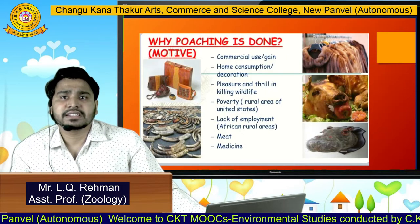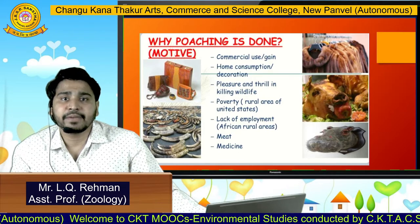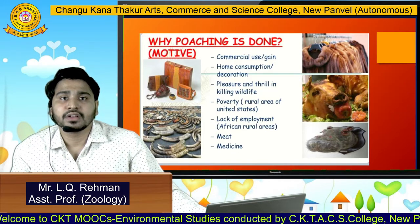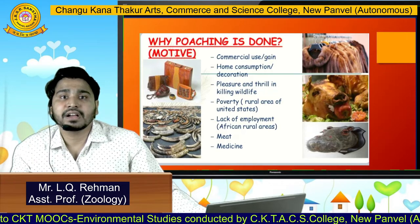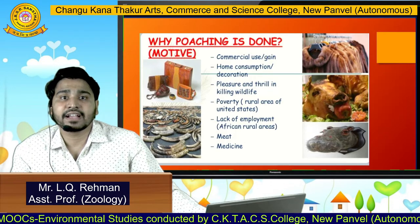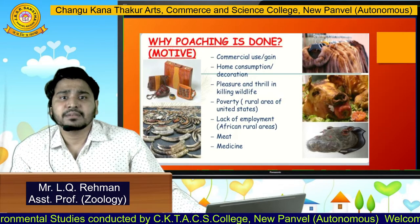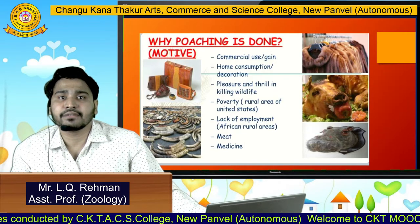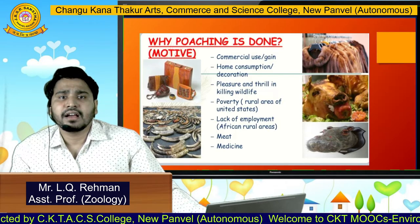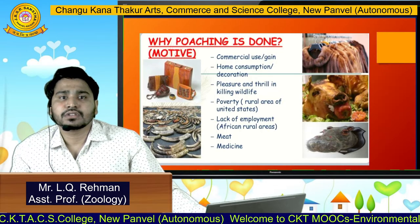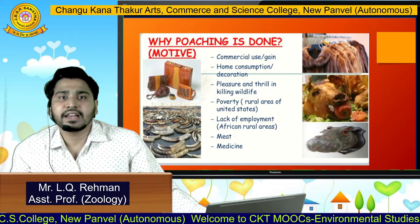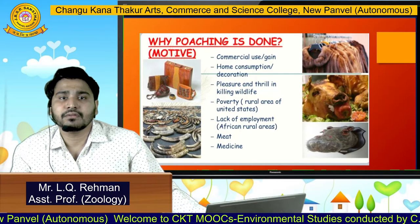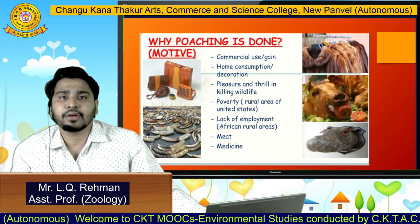So why is poaching done? What is the motive behind it? Commercial use or gain, home consumption, and decoration purposes. Next is pleasure killing — the pleasure and thrill in killing wildlife. And one major reason is also poverty in rural areas and many different parts of the world, and lack of employment.